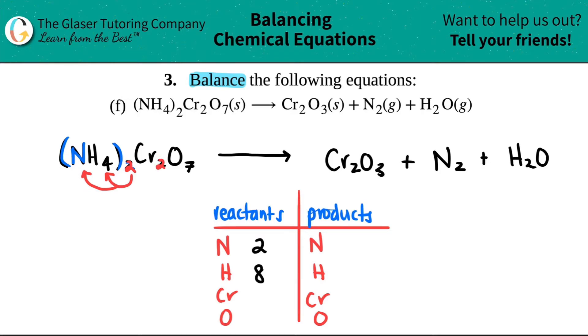There are two chromiums, so I'll put that there. And then we have seven oxygens. So there you go.